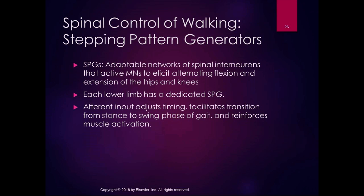There's an interesting effect in the spinal cord called a stepping pattern generator — networks of spinal interneurons that activate motor neurons to elicit alternating flexion and extension of the hips and knees. Each lower limb has a dedicated stepping pattern generator in the spinal cord. Afferent input adjusts timing, facilitates the transition from stance to swing phase of gait, and reinforces muscle activation.